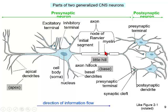The axon includes myelin in many CNS neurons. The gap at roughly one millimeter spacing is called a node — the node of Ranvier. The axon bifurcates and synapses onto a postsynaptic cell with its presynaptic terminals, and the whole process goes on again.